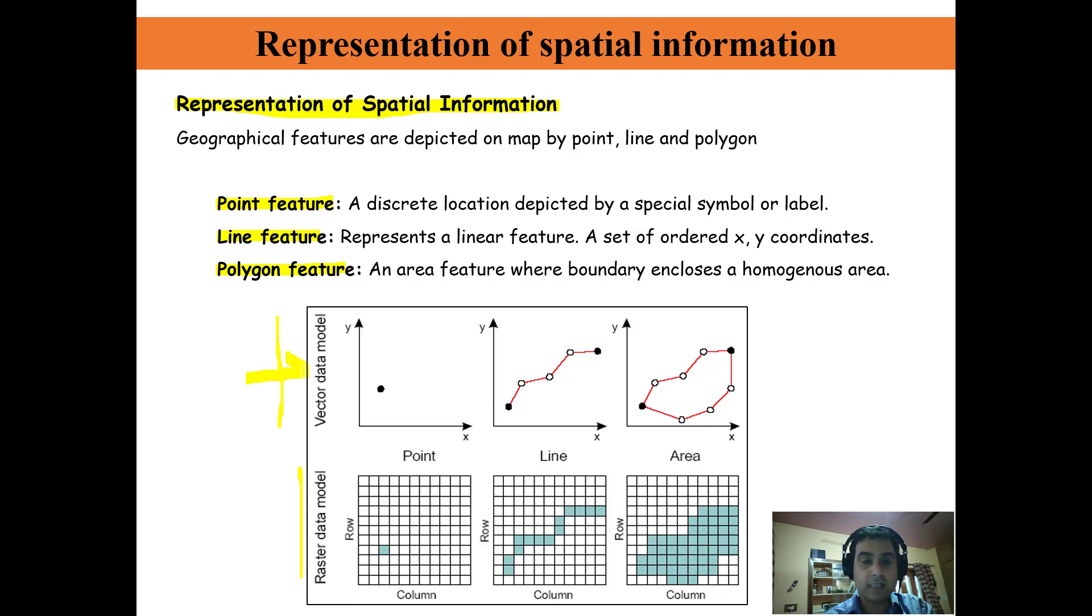How are we going to represent that in vector data model and in raster data model? In vector data model it will be like this: point, and the line will be a series of those X Y at those points, and area will be when all these points are joined with each other. This is the representation of vector model.